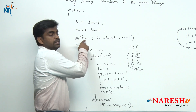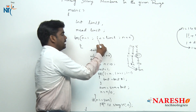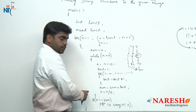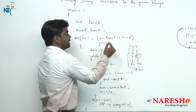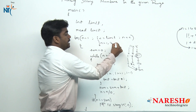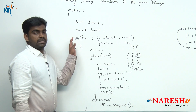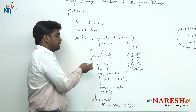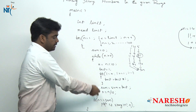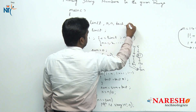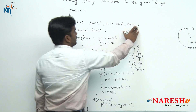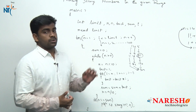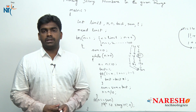Now observe: first N value is 1, which is less than or equal to the limit — say 100. The control moves inside and checks whether 1 is a strong number. If it is, it prints it. Next N becomes 2, then 3, and so on up to 100. The variables we use are: R, N, fact, sum, and i for the factorial. This is the program to display all strong numbers in the given range. Hope you understood. For more videos, please subscribe to the channel. Thank you.